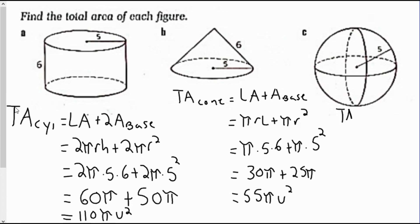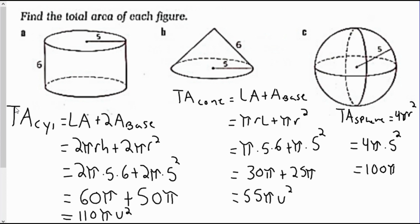For part c, the total area of a sphere equals 4πr². Plugging in radius = 5: 4π(5²) = 100π units squared. So the total area of this sphere is 100π units squared.